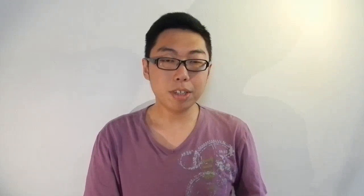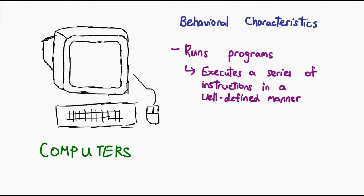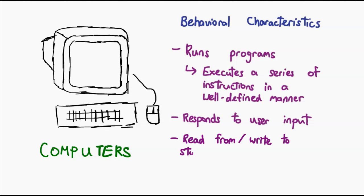And what this means is, every time your computer sees a particular instruction, it has to react in a certain way, and not in some random unpredictable manner. A computer should be able to respond to user input by producing some kind of output, and in most cases, computers should be able to read from and write to storage.